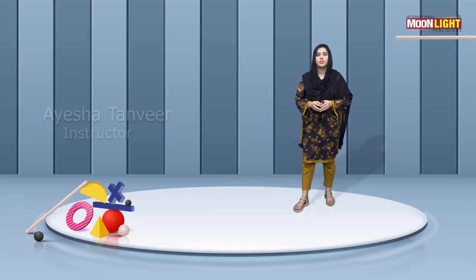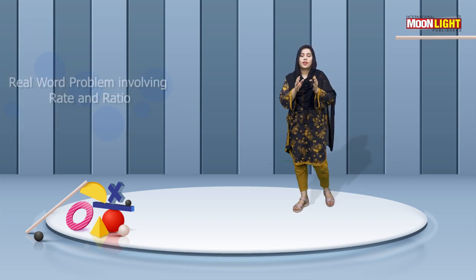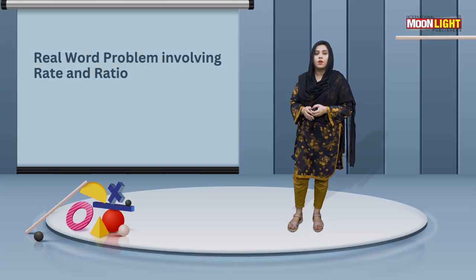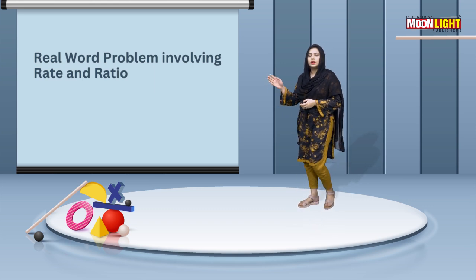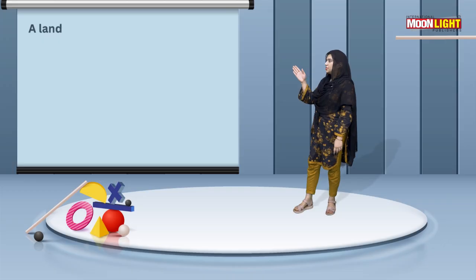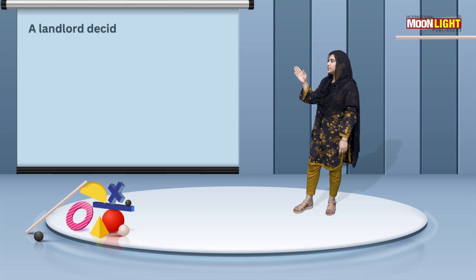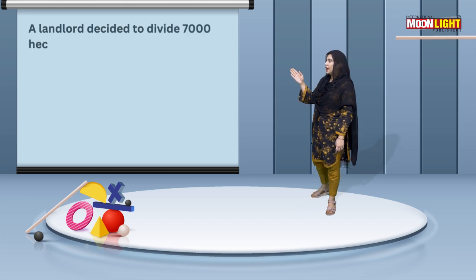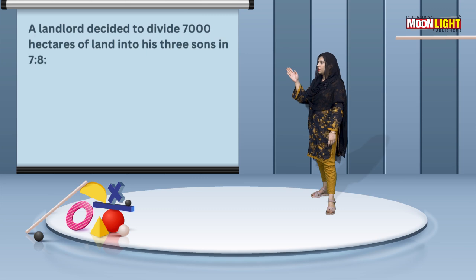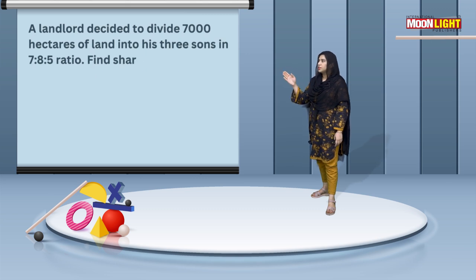Our today's topic is about the comparison of rate and ratio in real life word problems. We will discuss the first example: a landlord decided to divide 7,000 hectares of land among his three sons in the ratio 7:8:5.